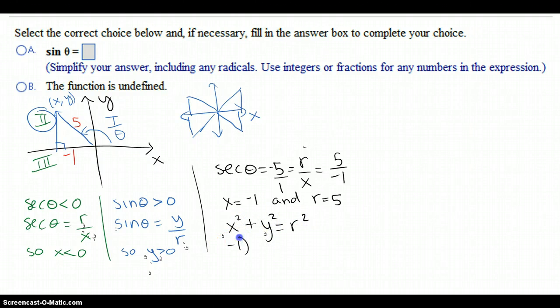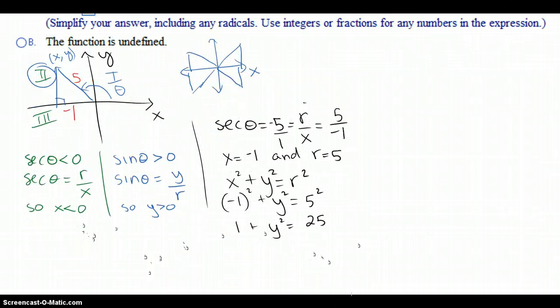We know that x squared plus y squared is equal to r squared. x is negative 1. We don't know what y is. That's going to equal 5 squared. So rewriting this, we know 1 plus y squared equals 25. Subtract 1 from both sides, and you get 24. So y, taking the square root of both sides, is plus or minus the square root of 24.